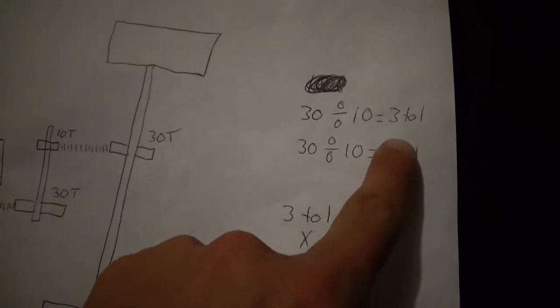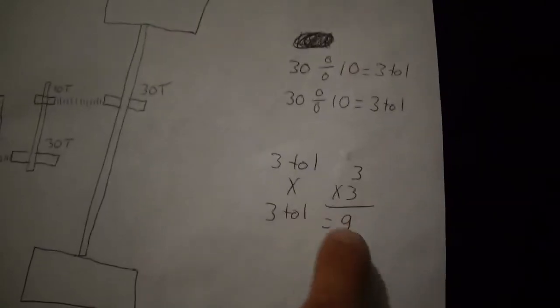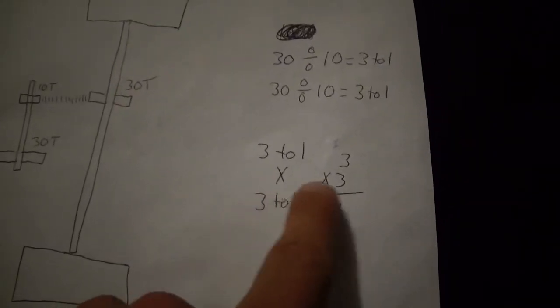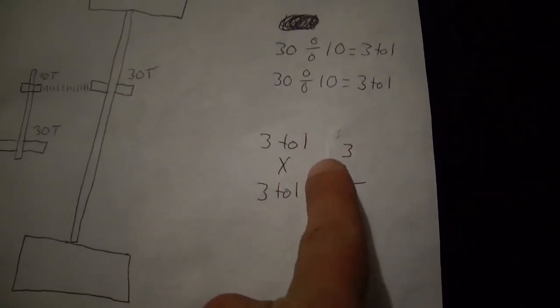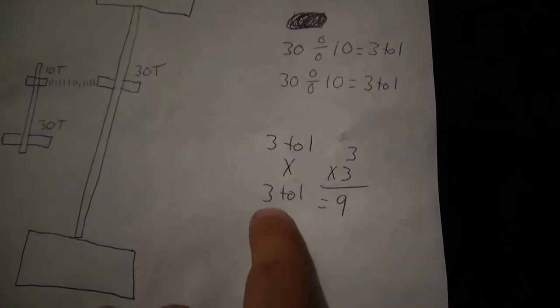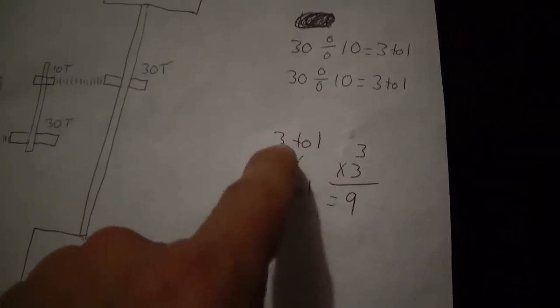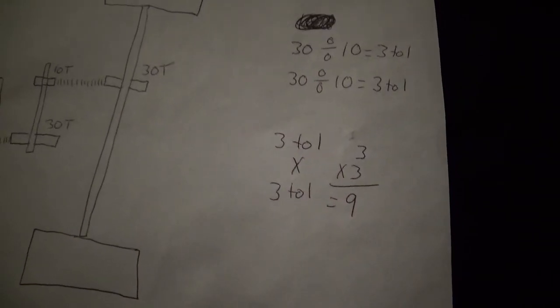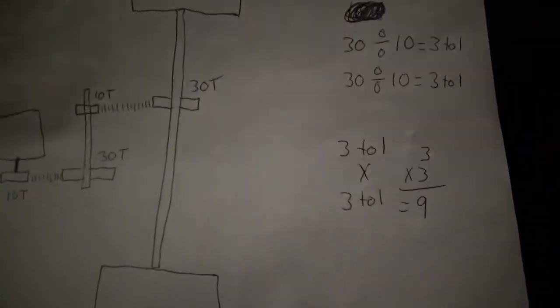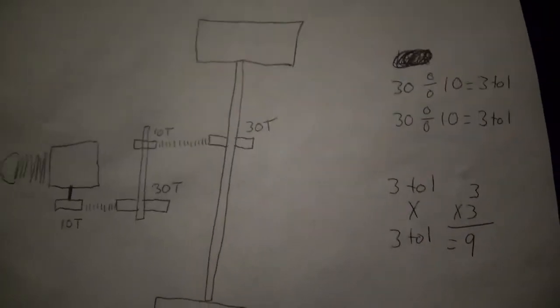30 divided by 10, 30 divided by 10. Three-to-one, three-to-one. Now you take those together and three times three equals nine. You do not add the ratios together, you times them.